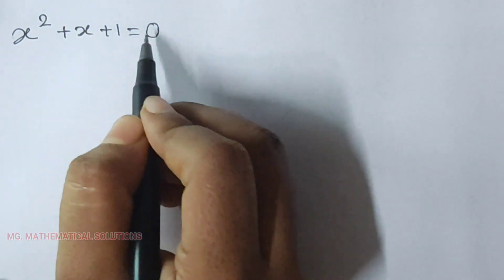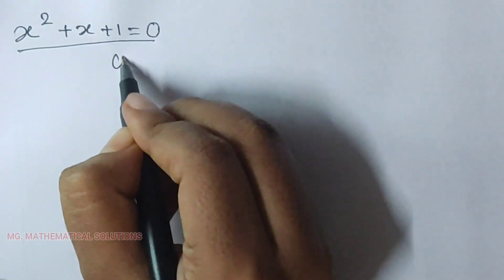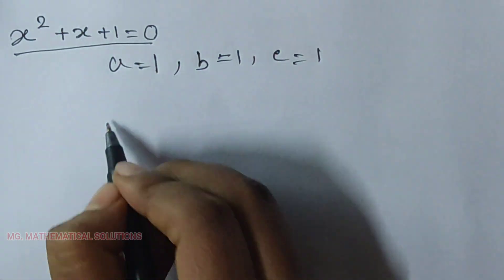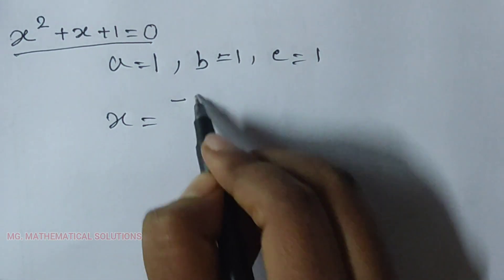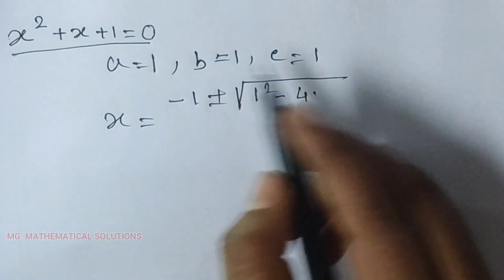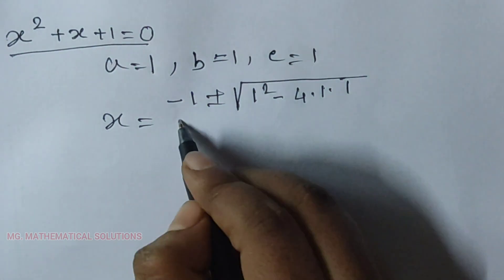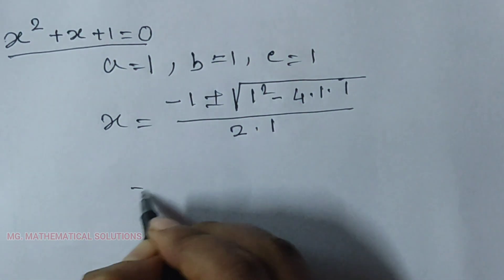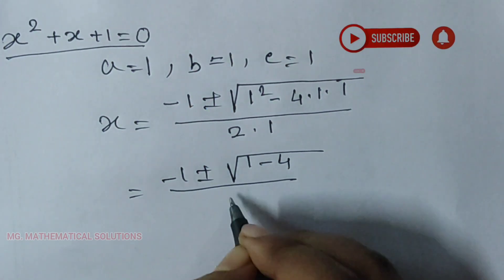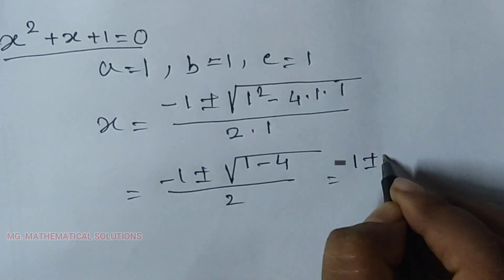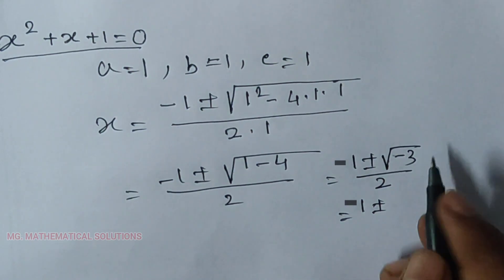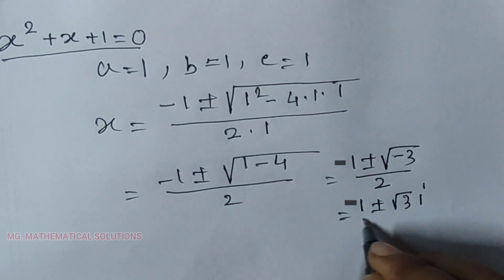Now we solve x² + x + 1 = 0. Here a = 1, b = 1, and c = 1. Using the formula: x equals minus 1 plus or minus root over (1² - 4·1·1), divided by 2·1. That gives minus 1 plus or minus root over (1 - 4), which equals minus 1 plus or minus root over minus 3, divided by 2. So x equals (-1 ± √3·i) / 2.